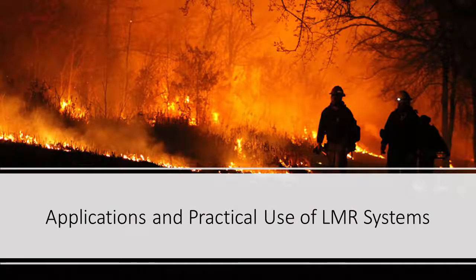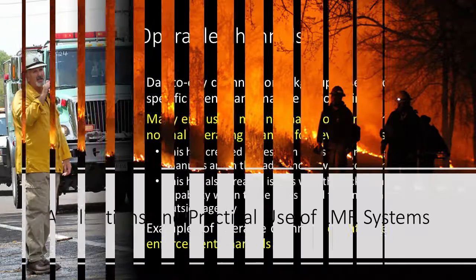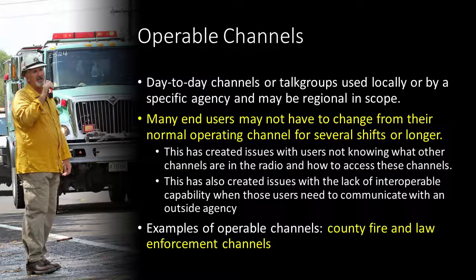In Unit 3, we're going to take a practical look at how land mobile radio systems and technologies enable us to communicate more efficiently and effectively. Operability, as we defined before, is our ability to communicate with the people that we need to communicate with on a daily basis during the course of normal business.